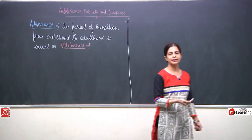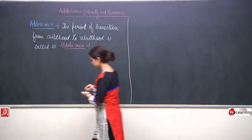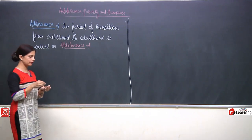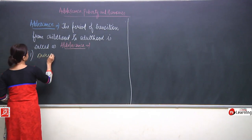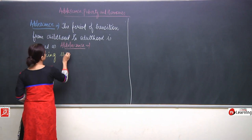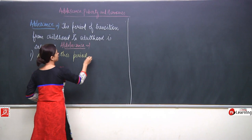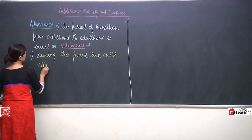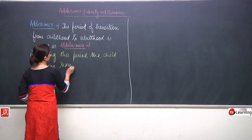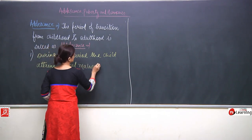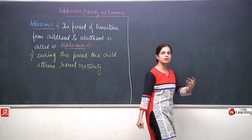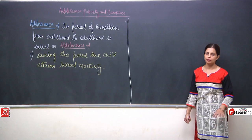We are also going to read the characteristics in detail. But first of all, what is the special characteristic of this stage? During this period, the child attends sexual maturity. The sexual characters become visible.